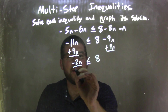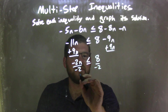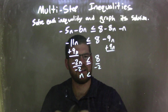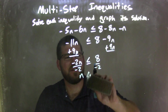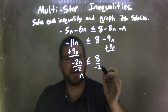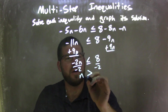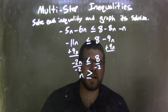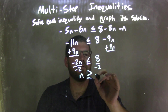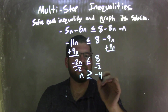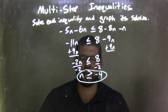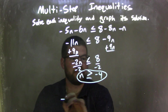Now I want to bring my 9n over to the left, so I'm going to add 9n to both sides. Negative 11n plus 9n is negative 2n, and that's less than or equal to 8. Now I want to divide by negative 2 on both sides — we've got to flip that inequality since we're dividing by a negative, so the less than or equal to sign turns into a greater than or equal to sign. 8 divided by negative 2 is negative 4, and now we have our answer: n is greater than or equal to negative 4, so I need to graph it.